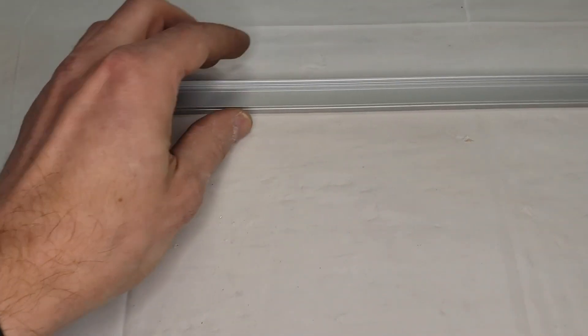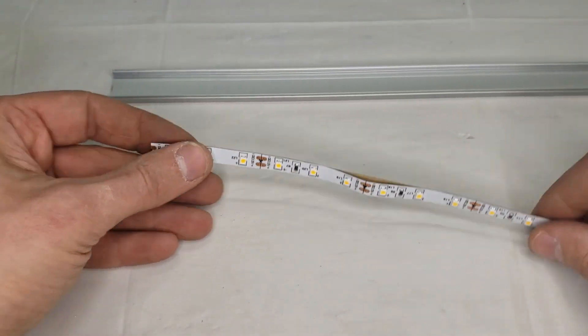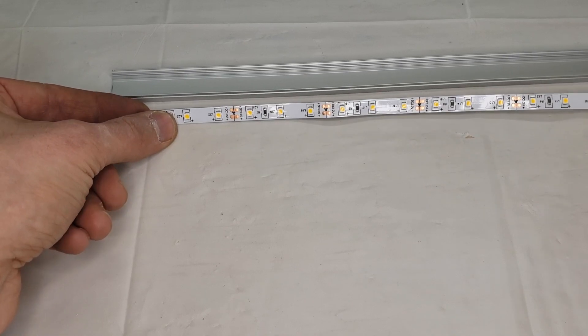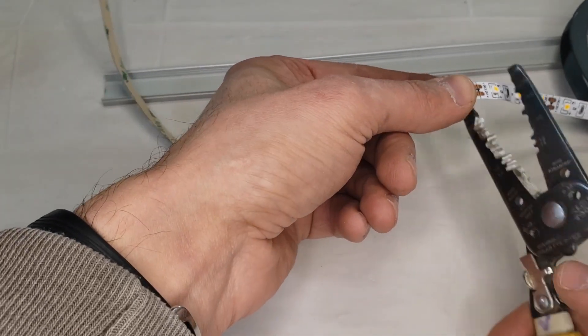The first thing I'm going to do is cut my tape strip to the desired length. I want to fit it inside of this aluminum channel, so I'm going to cut it right here along the scissor marks.